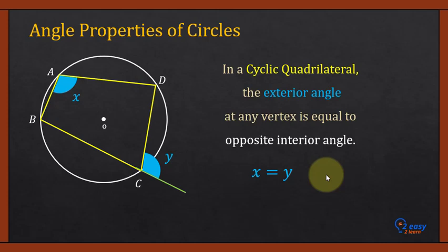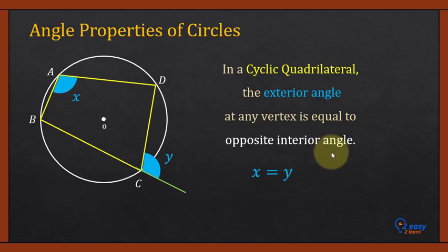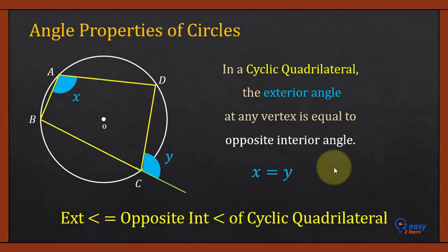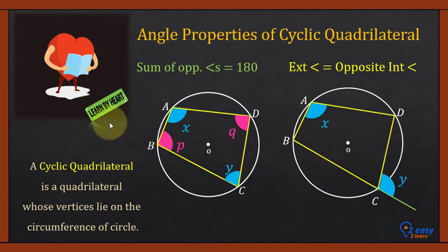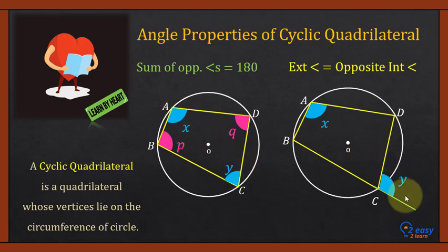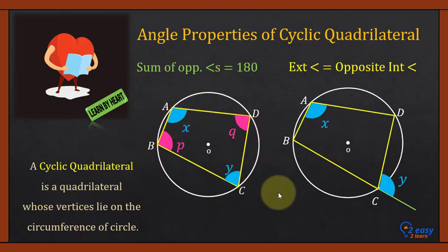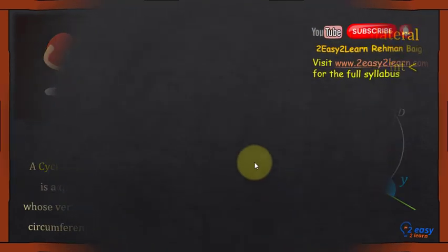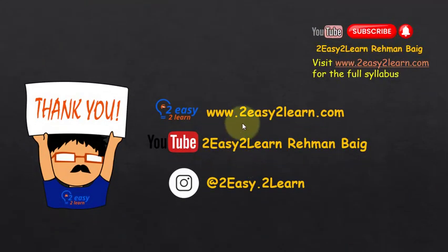Keep these angle properties of cyclic quadrilaterals in mind. When you get a question, identify the cyclic quadrilateral and apply these two properties: the sum of opposite angles equals 180 degrees, and the exterior angle equals the opposite interior angle. A cyclic quadrilateral is a quadrilateral whose vertices lie on the circumference of the circle.